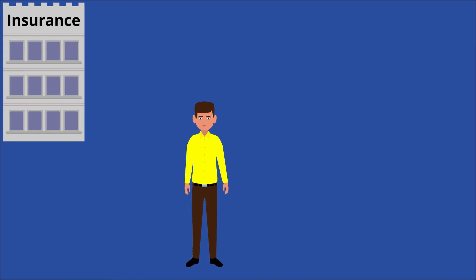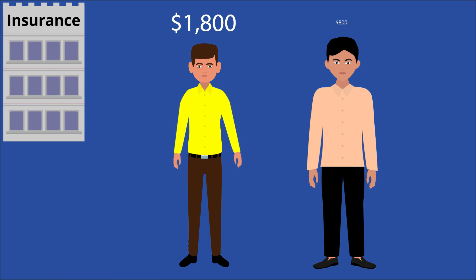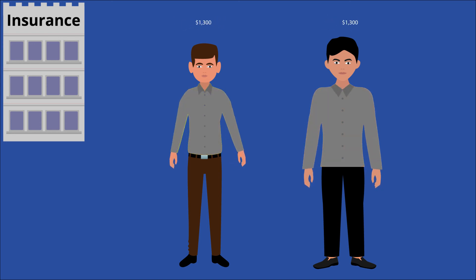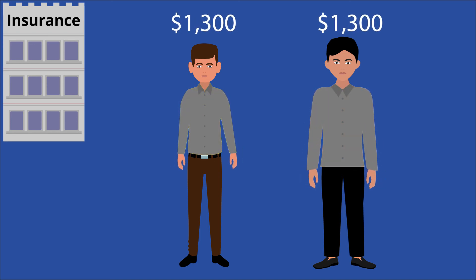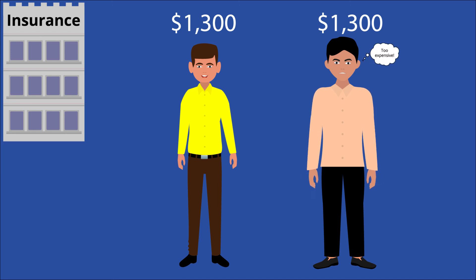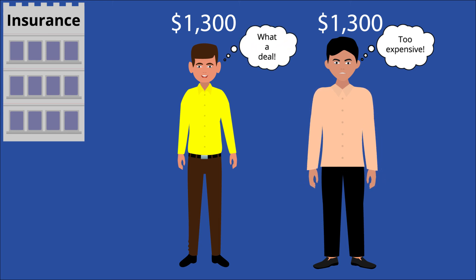The lemons problem isn't exclusive to car dealerships, though. It also affects insurance. There's no way for insurance companies to definitively know if a person is a high-risk lemon, who's going to cost them a fair amount of money, or a low-risk peach, who's risk-averse. They thus average the two costs together and have customers pay the average price. The customer, on the other hand, has a good idea of how risk-averse they are. If you don't take a lot of risks, you're likely to opt out of the program because it's too expensive. If you take a lot of risks, you're going to opt in because it's comparatively a good deal. In the long run, this means the insurance company is likely to end up with an excess of lemons.